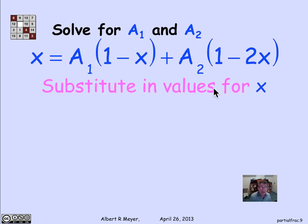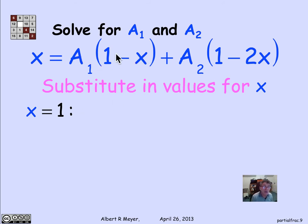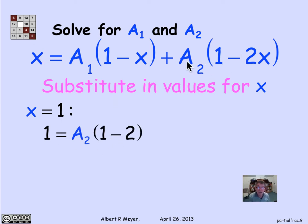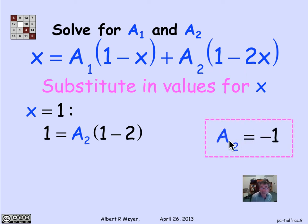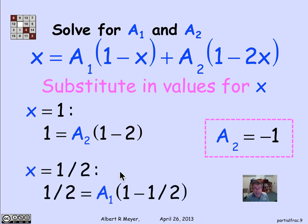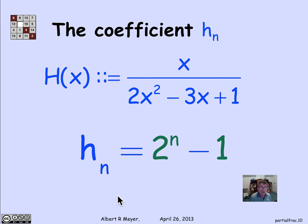When trying to find a1, the obvious thing is to substitute x = 1/2. When trying to find a2, substitute x = 1, which makes the a1 term 0. If I substitute x = 1, this term goes away, and I discover that 1 equals a2 times (1 minus 2), which immediately tells me a2 is minus 1. Likewise, if I substitute x = 1/2, I get 1/2 equals a1 times (1 minus 1/2), and that tells me a1 is 1. So the nth coefficient of h(x) is simply 2^n minus 1.